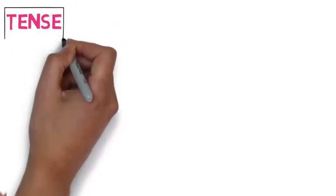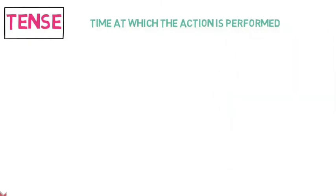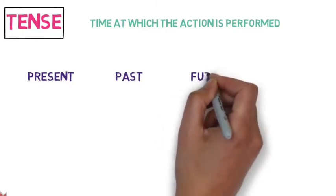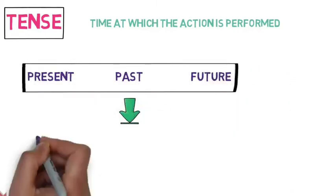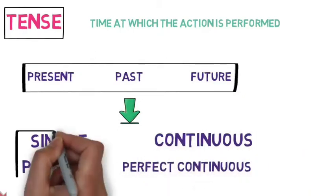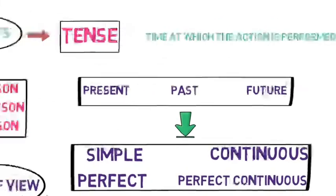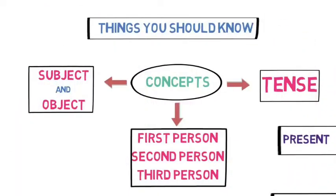Now let's look into tenses. Tense denotes at which time the action is performed. Tenses are mainly divided into three types: present, past, and future. And they are subdivided into four subtypes: simple, continuous, perfect, and perfect continuous. So in total, there are 12 tenses. If you want to recall or learn tenses, I will provide the links in the description. So these are the three main things that you must know.